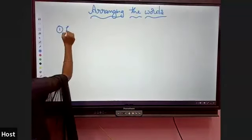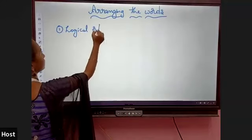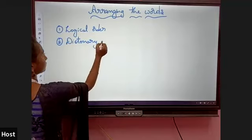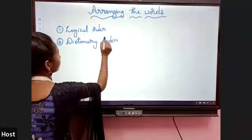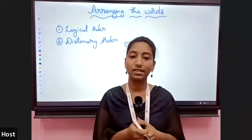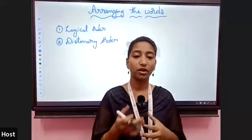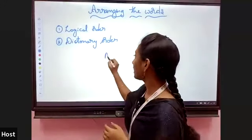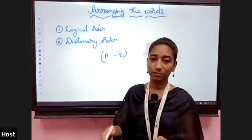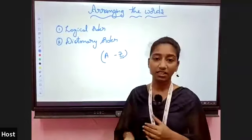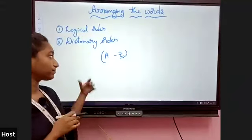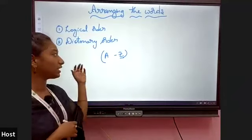The first type is logical order and the second one is dictionary order. Dictionary order means — observe a dictionary. In the dictionary, the words are arranged from A to Z. First, some words start with A, then B, C, D, and it continues up to Z. So the dictionary arranges words in the form of A to Z.